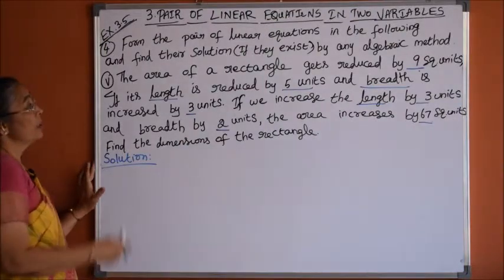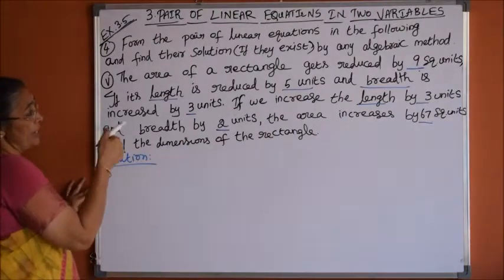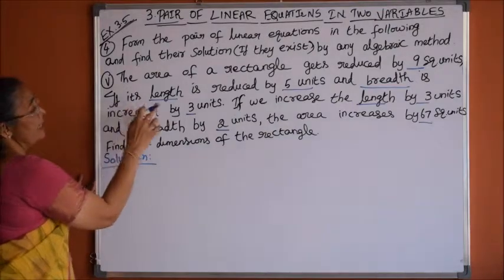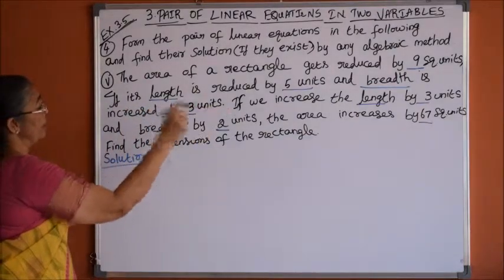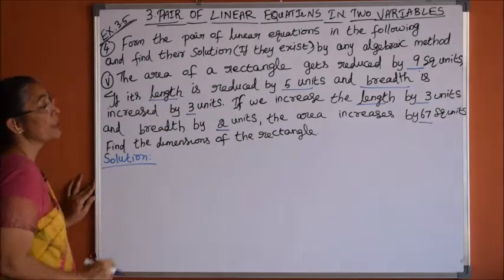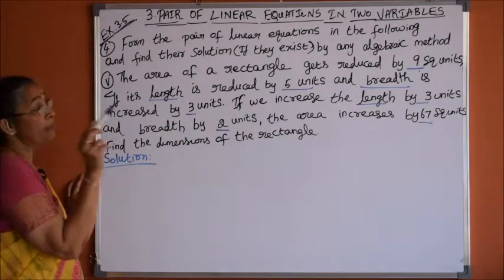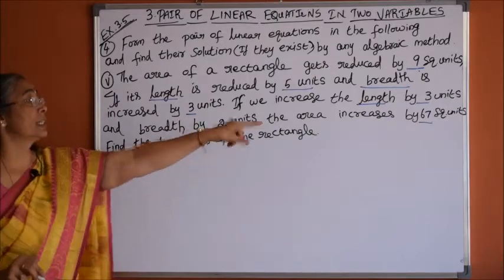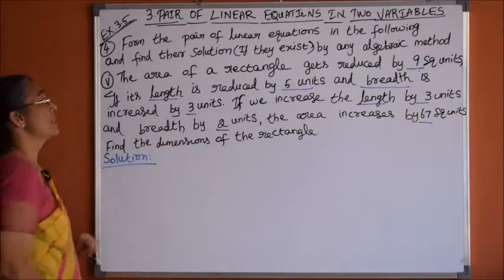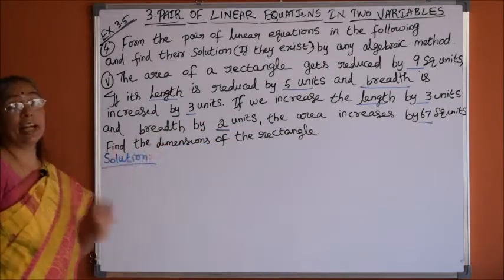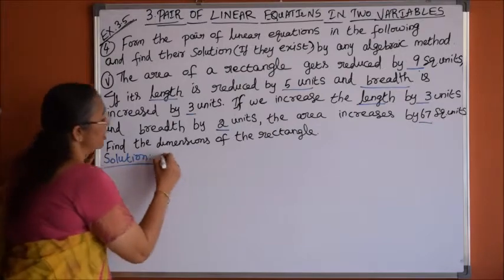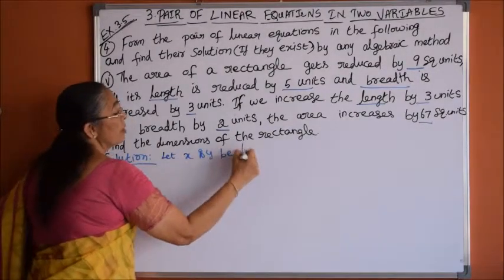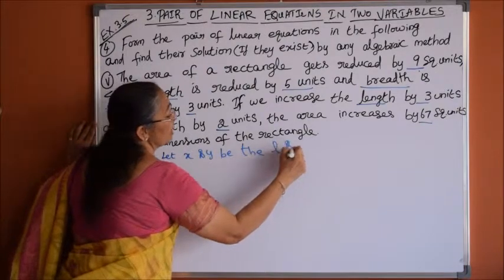Problem number 5: the area of a rectangle gets reduced by 9 square units if its length is reduced by 5 units and breadth is increased by 3 units. If we increase the length by 3 units and breadth by 2 units, the area increases by 67 square units. Find the dimensions of the rectangle. Let x and y be the length and breadth of the rectangle.